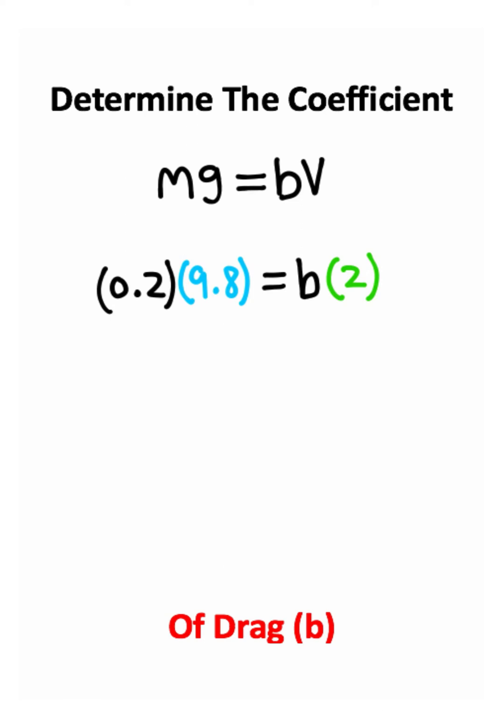So plugging everything in, you should end up with 0.2 times 9.8 equals b times 2, where we're just trying to solve for this b.